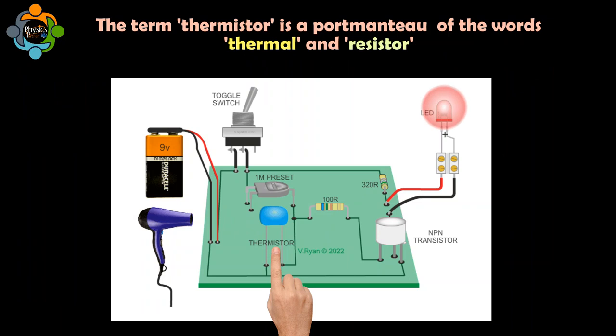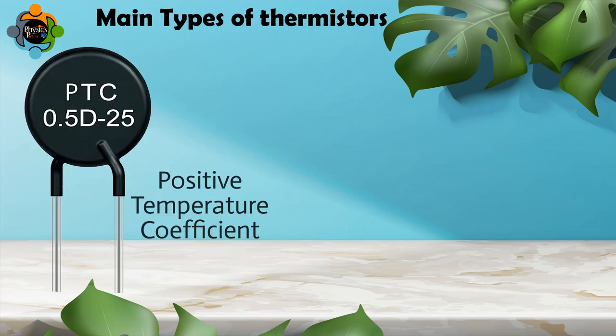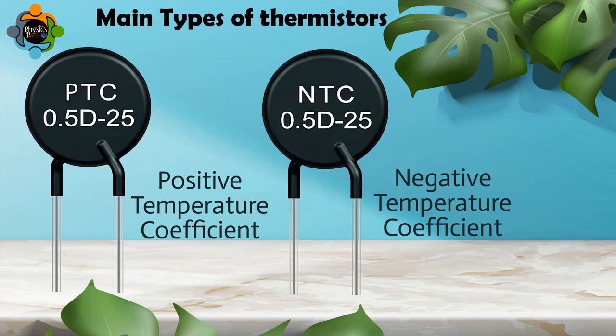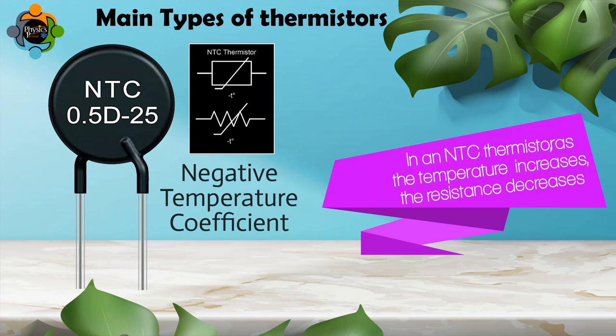The term thermistor is a portmanteau of the words thermal and resistor. There are two main types of thermistors: positive temperature coefficient, which is called PTC, and negative temperature coefficient, or NTC.